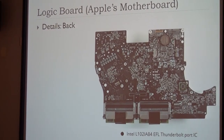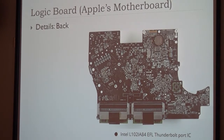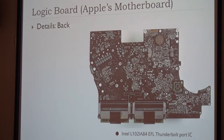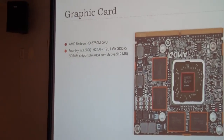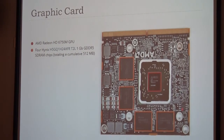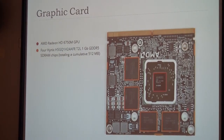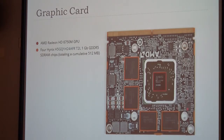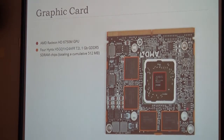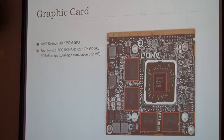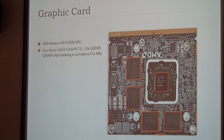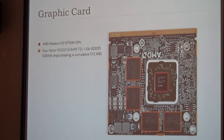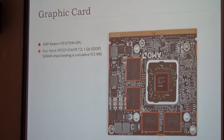This is the back. As you can see, we have the Thunderbolt port IC, indicated in black color. Now let's talk about the graphics card. Apple uses an AMD GPU. And besides the chips, we have GDDR RAM chips, which is the memory. For this specific graphics card, it can have 512 megabytes of memory.